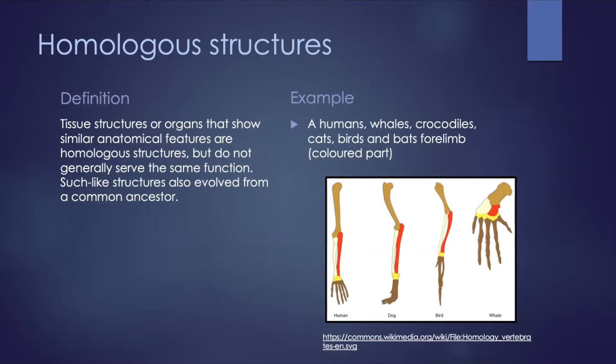An example would be humans, whales, crocodiles, cats, birds, and bats — their forelimbs all have the same arrangement of bones, hence they are considered homologous structures.